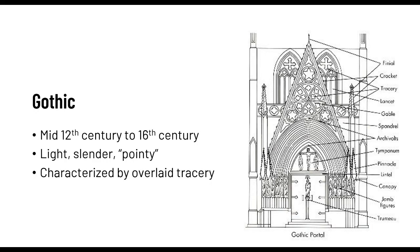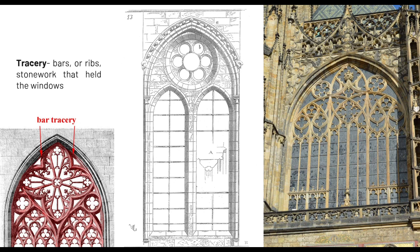Gothic architecture became prominent during the mid-12th century to 16th century. It's characterized by the overlaid tracery, and also as light, slender, and pointy. When you say tracery, these are bars or ribs of stonework that held the windows. It divides the openings into sections of various proportion by stone bars or ribs of molding, but most commonly it refers to the stonework elements that support the glass in a window. Therefore, it's not only for aesthetic purposes but also for a structural purpose. We'll discuss the parts of the Gothic window later on.